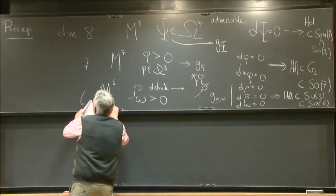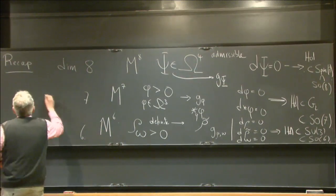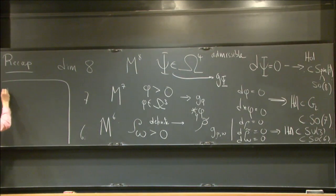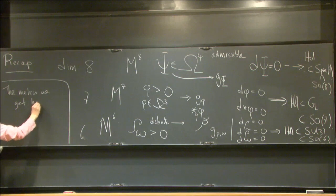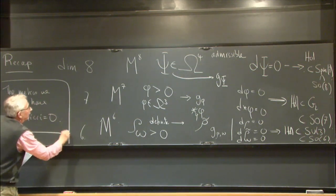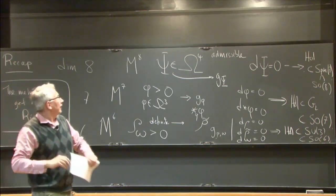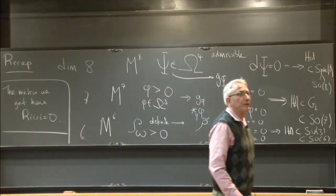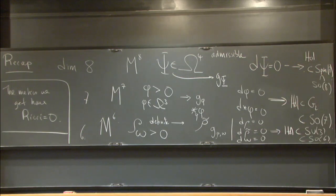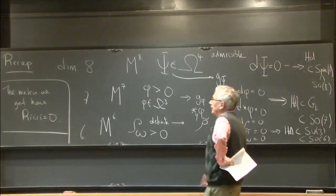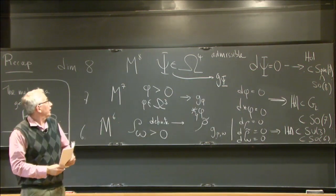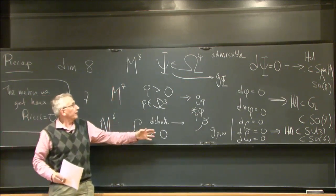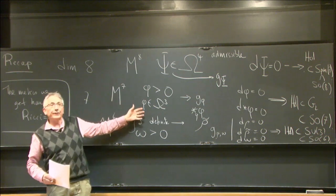So all the metrics we achieve have the property of having zero Ricci curvature, but in an interesting way they're not, for example, flat. They are given by either Calabi-Yau manifolds or these two exceptional cases.